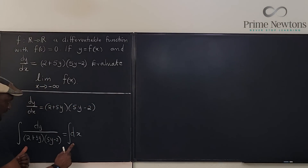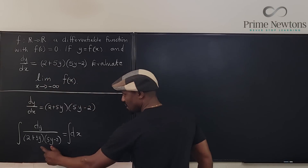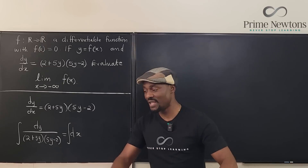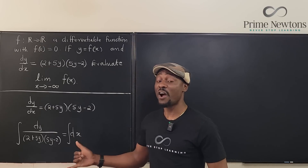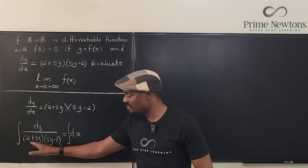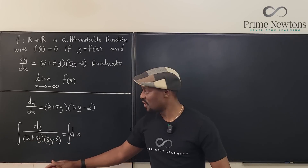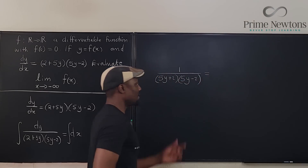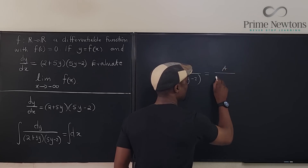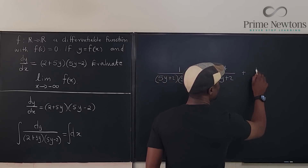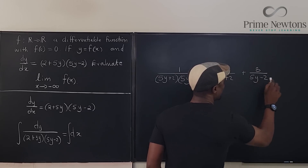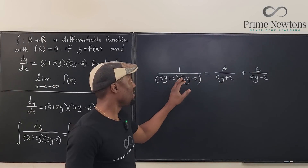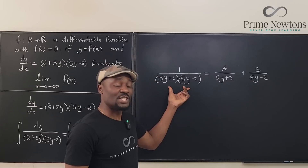How do we integrate this? There are two ways, but I'm going to go the general way, which is not the tricky way. We can do integration by partial fraction decomposition. So this is going to be A over (5y + 2) plus B over (5y − 2). I'm going to do the cover-up method, because that method works very quickly for separable linear denominators like this.